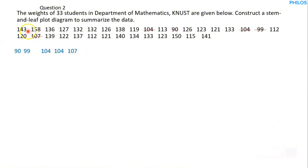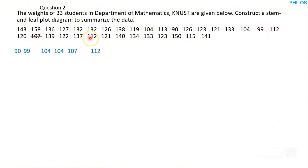For the 110s: we have 112, another 112, then 113, 115, and 119 — mark each and write them down. That's all the values in the 110s.